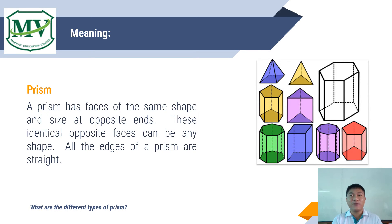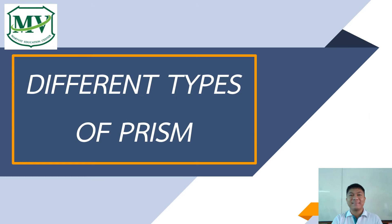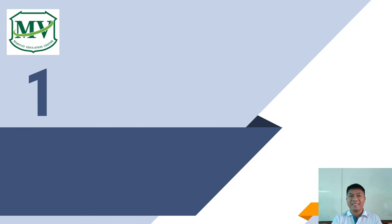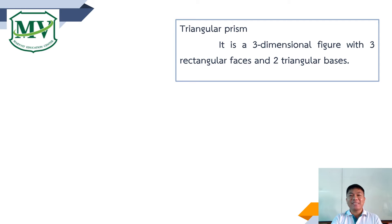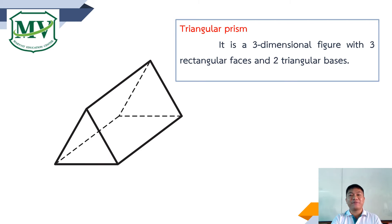What are the different types of prism? The first type is the triangular prism. A triangular prism is a three-dimensional figure with three rectangular faces and two triangular bases.